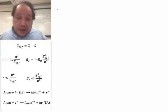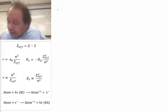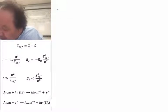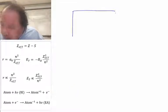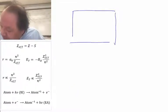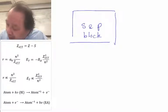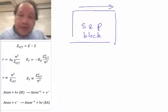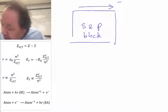And we can use these notions from the extended Bohr model to look at the S and P block. So here is the S and P block of the periodic table. And going left to right, the dominant feature is imperfect shielding, which causes Z_eff to increase.